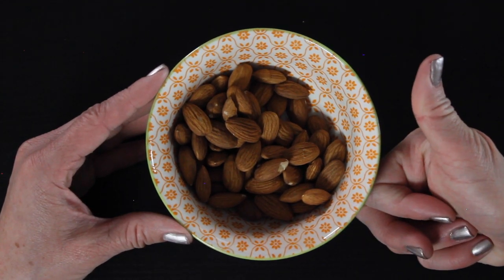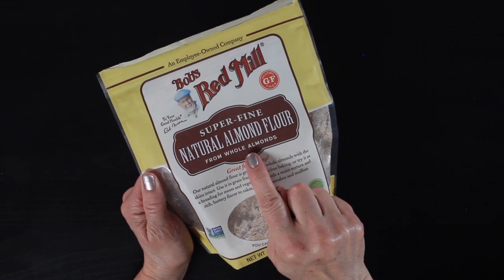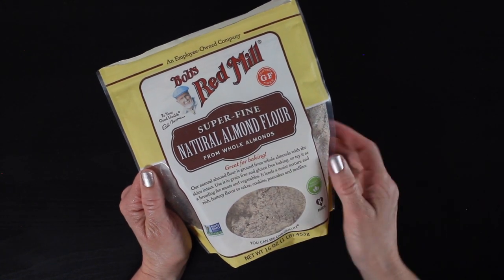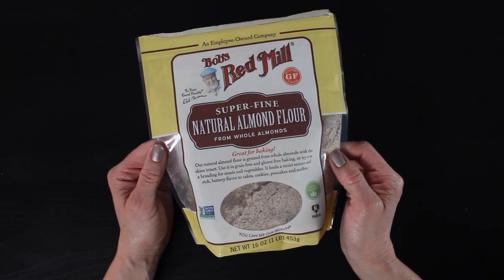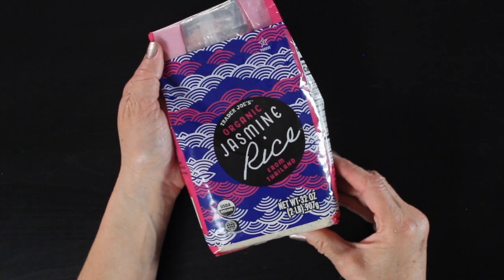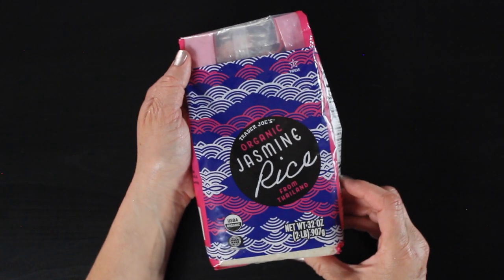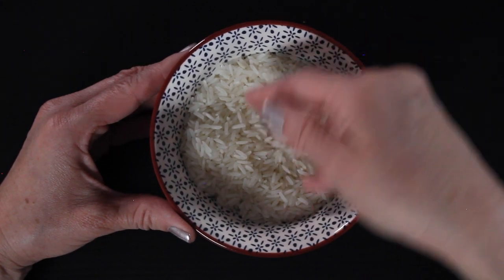The skins on the almonds actually add another element to the exfoliation. If you want a shortcut, you can get natural almond flour. You want to make sure that you get the kind that's made out of whole almonds so you get that exfoliating effect. We'll be using some rice. You can use jasmine rice, basmati rice. I've used both in this recipe and I didn't see a difference at all. So either will work.